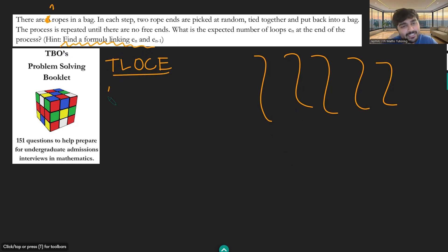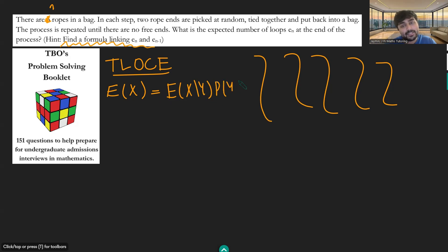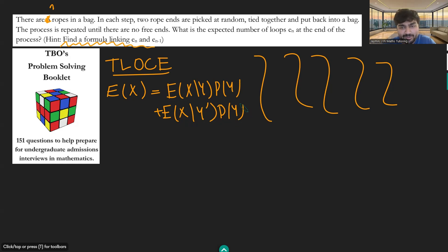The law of conditional expectation states that the expected value of some event X happening is equal to the expected value of X given Y times the probability of Y, plus the expected value of X given not Y times the probability of not Y. You can in fact generalize this, but we don't need any further generalizations in order to solve this problem.